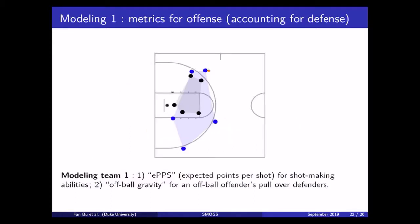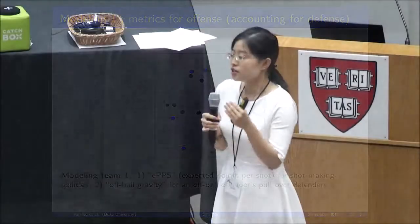We had two modeling teams. The first modeling team developed two different metrics for evaluating the quality of offensive play while explicitly accounting for the defensive side. The first metric they developed is called the expected points per shot, and that is used to evaluate different players' abilities to make shots. And the second metric they developed is called the off-ball gravity, and that is used to describe an offender's pull over all the defenders on the court when the offender doesn't have the ball. So it's kind of a metric for the danger level of an offender.